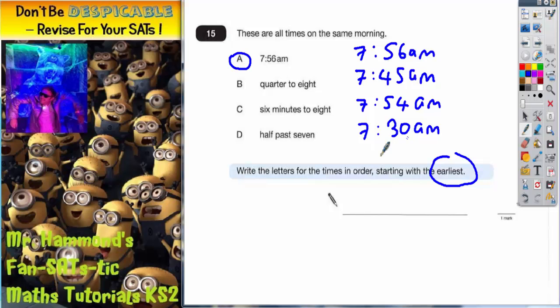So the earliest time is going to be 7:30, which is letter D. That's that one done. Then we're going for 7:45, which is letter B. So that one's done. We've only got two left to choose from, so 7:54 comes next. So that's C.